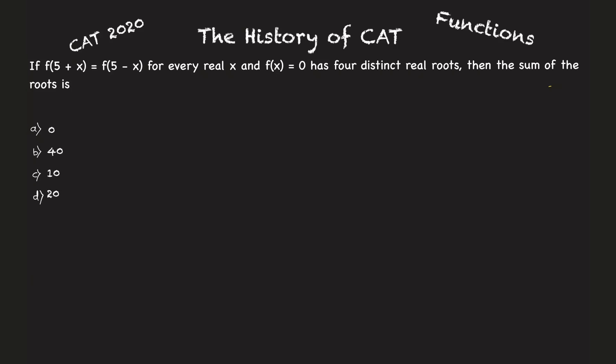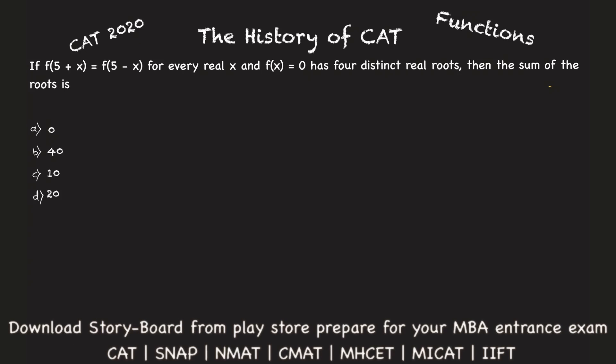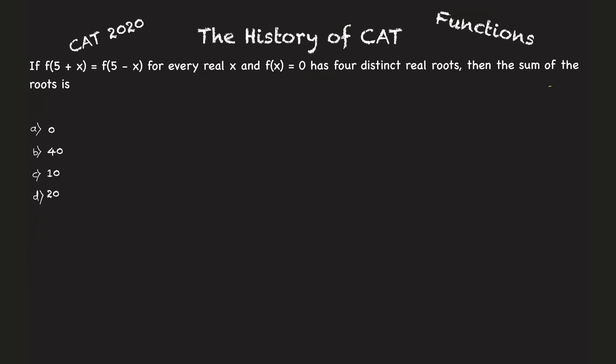Welcome to the History of CAT. Now we saw the next question which appeared in CAT 2020, and it is from the chapter of functions. It is given here: if f(5+x) equals f(5-x) for every real value of x, and f(x) equals zero has four distinct real roots, then the sum of the roots is what?